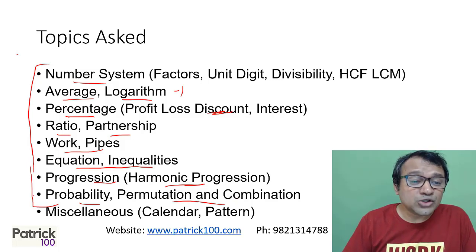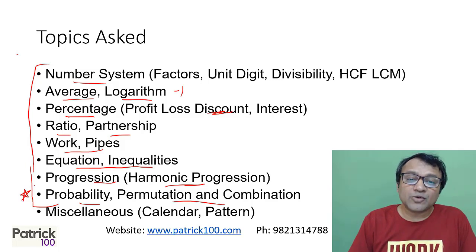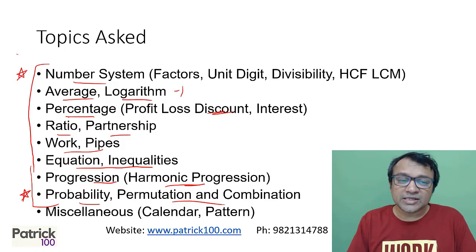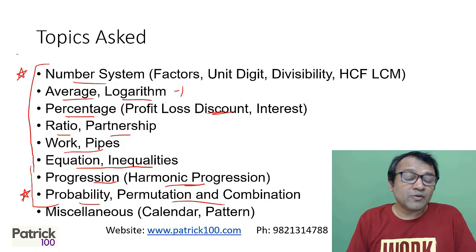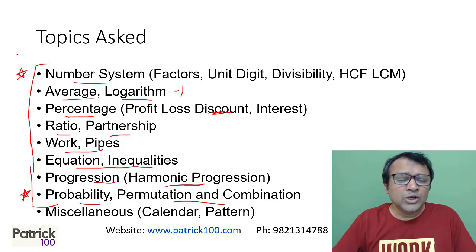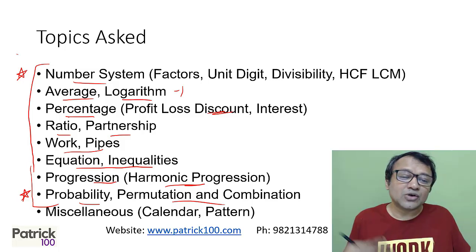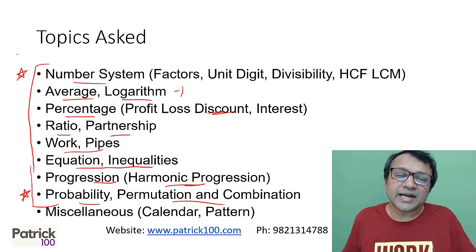There are quite a few questions on probability and permutation and combination — mark them as important because you need to be comfortable with them. Similarly, you need to be comfortable with number system: basic factors, unit digit, etc. These two areas are more important than the others, but you need to know all these topics to be comfortable in the NMAT examination. You need not go into topics beyond this — functions, high-level functions, trigonometry, or geometry are not needed at all. Just focus on these topics.